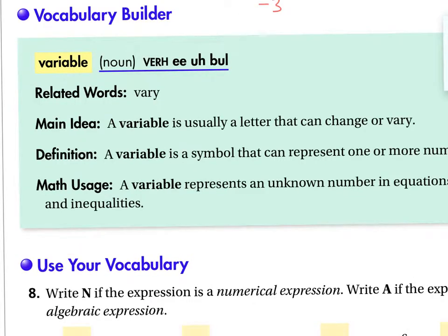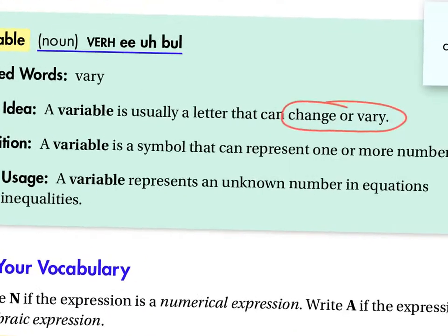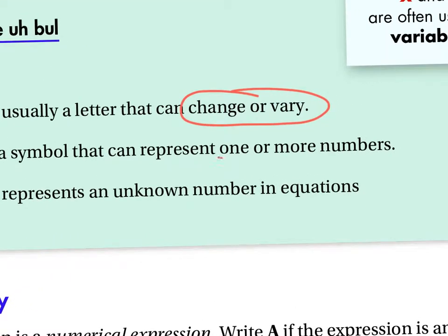The key on this thing is we have changing and vary. So please read the definition for us. Mathematically, the variable can mean anything because it can represent one or more numbers.